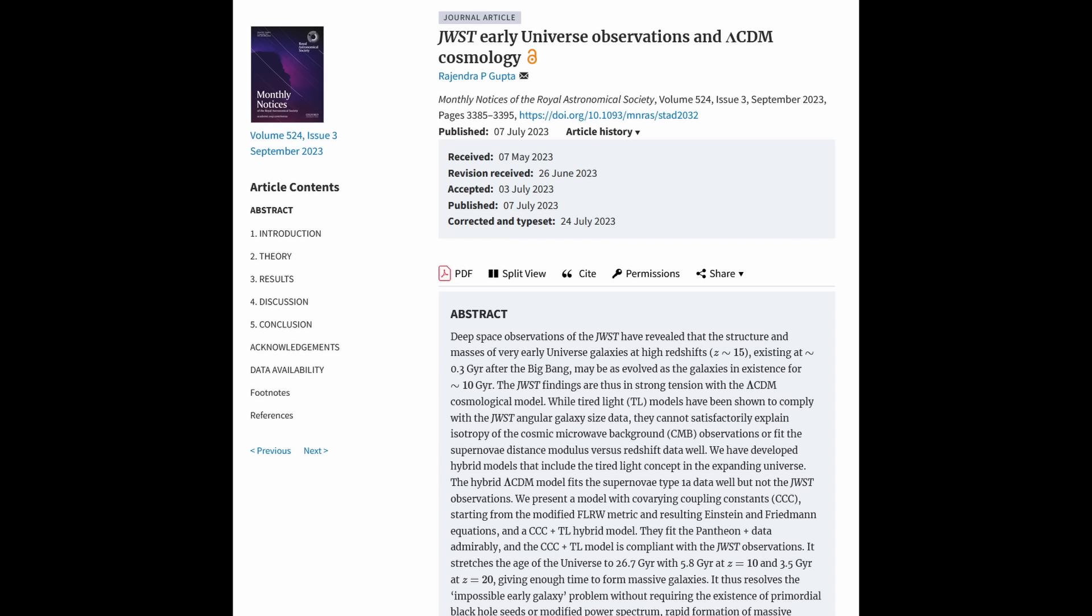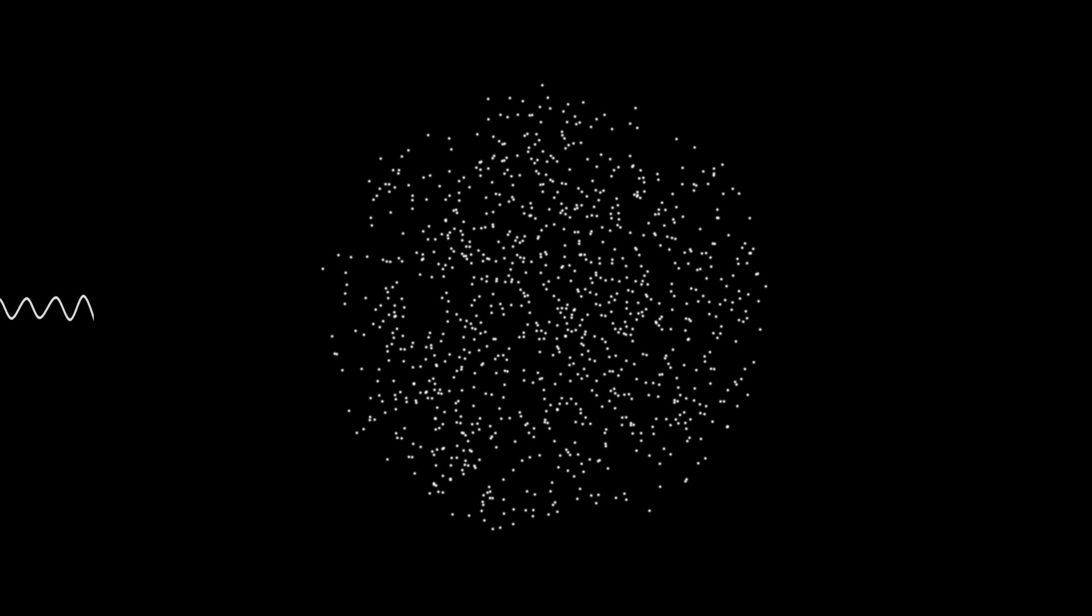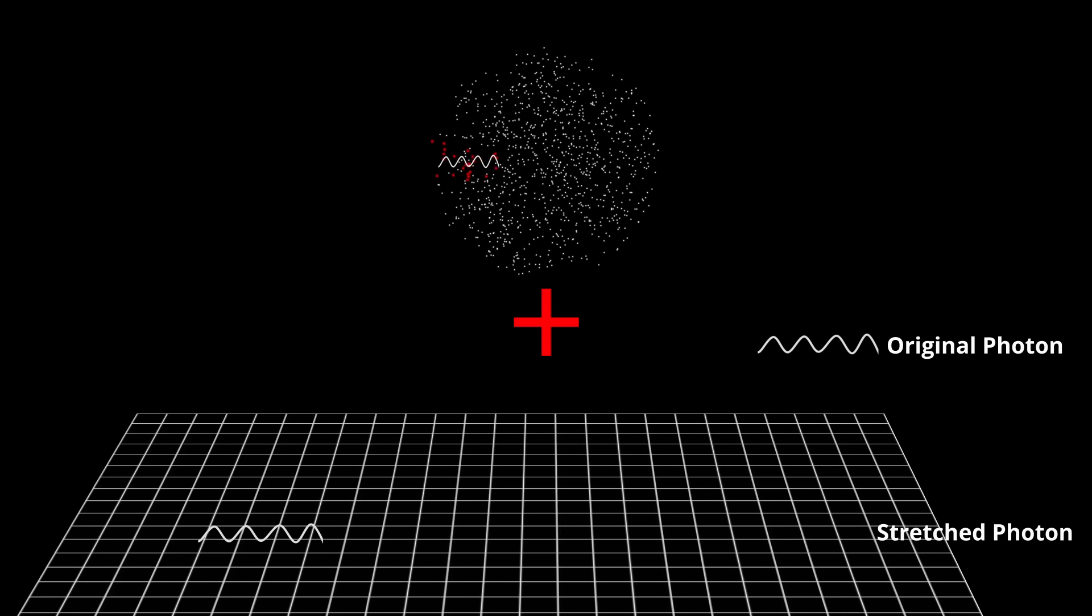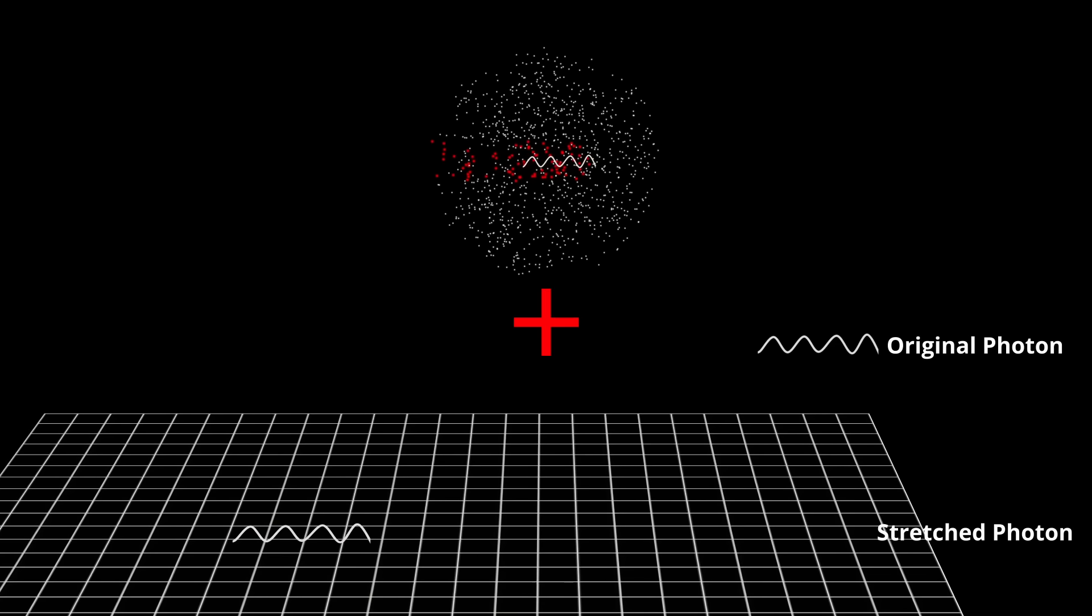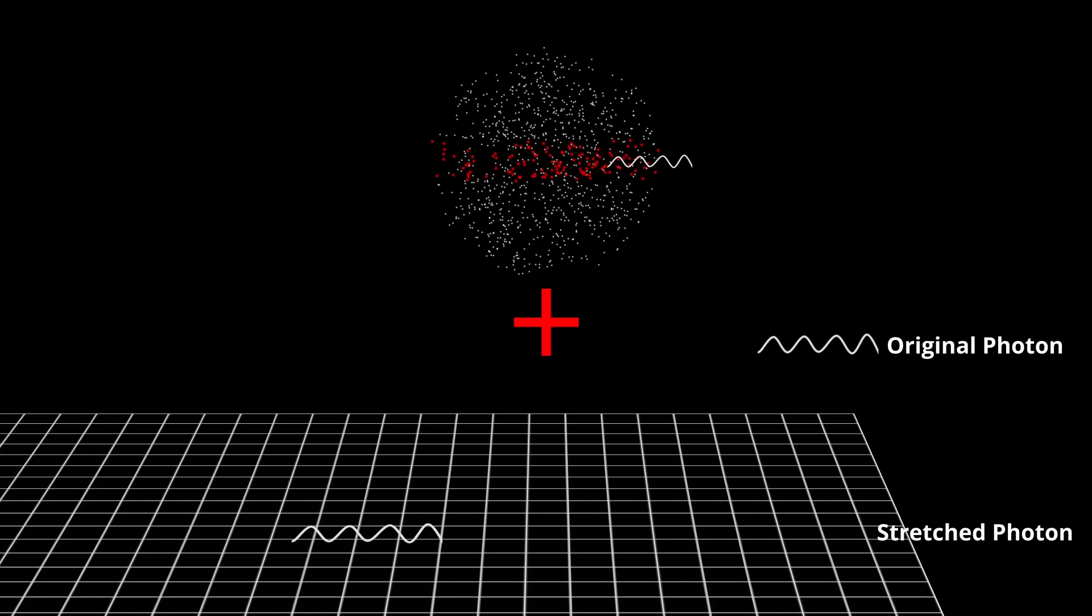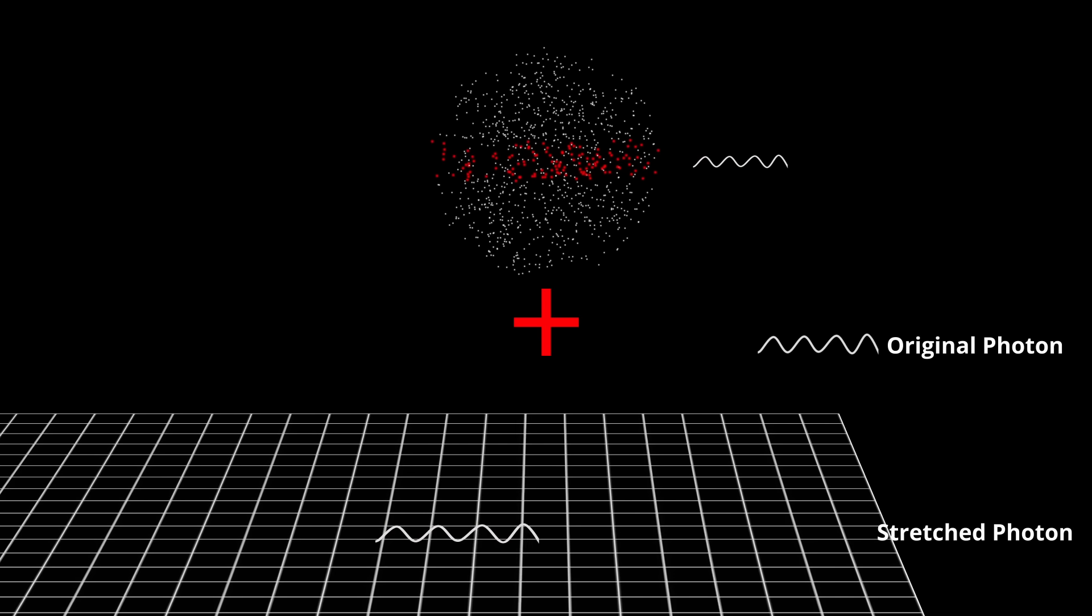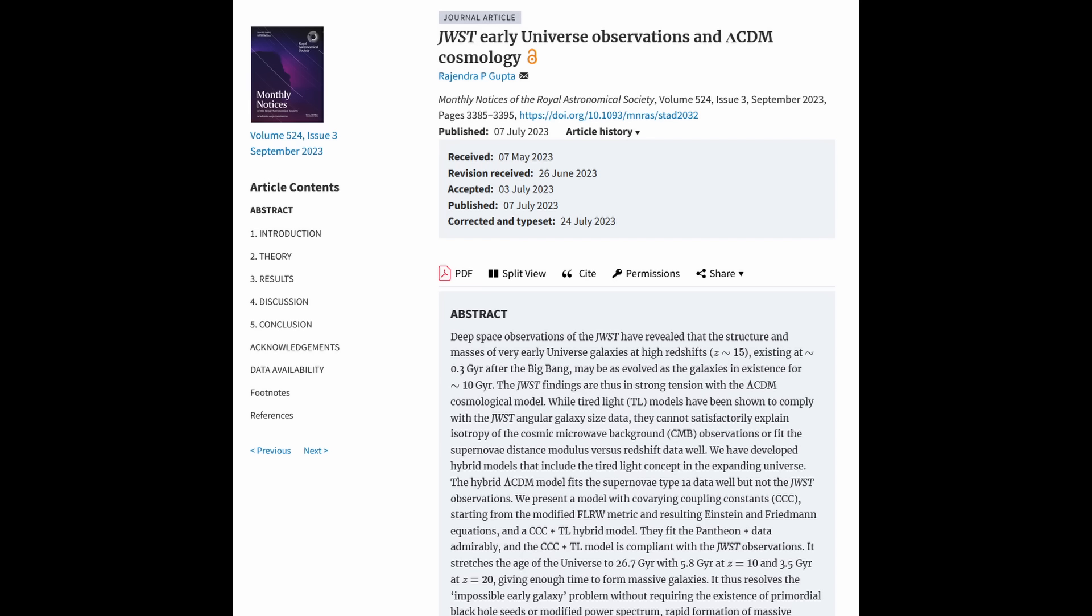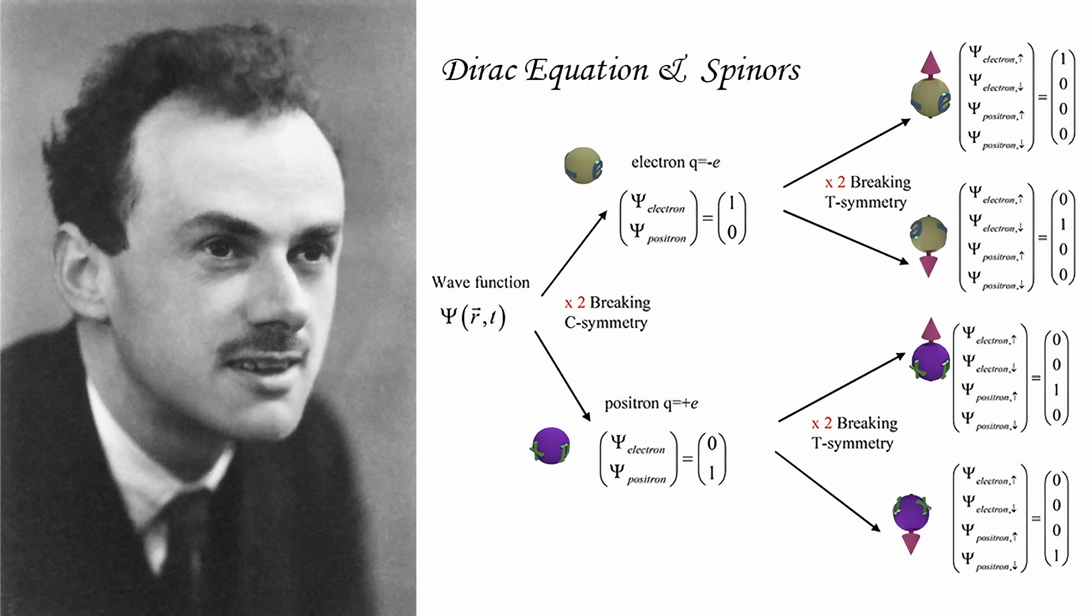In Gupta's paper, he proposes a novel perspective, integrating Zwicky's Tired Light model into an expanding universe framework. This reinterpretation offered a hybrid explanation for redshift, suggesting that it might not solely stem from cosmic expansion, but could involve additional factors. Gupta also introduced the concept of evolving coupling constants, building upon the pioneering work of Dirac, a distinguished theoretical physicist renowned for his contributions to quantum mechanics and quantum field theory.